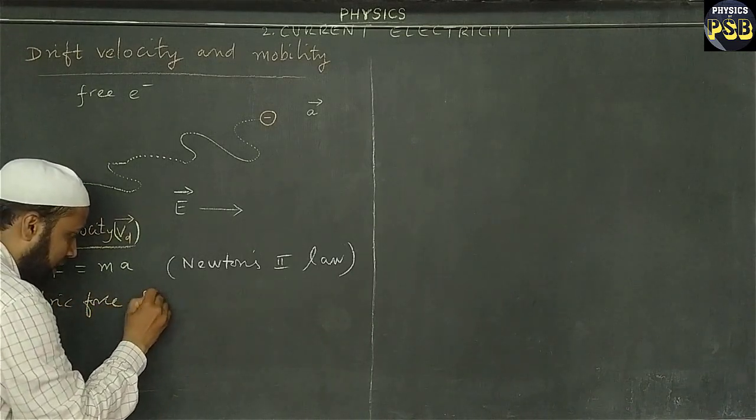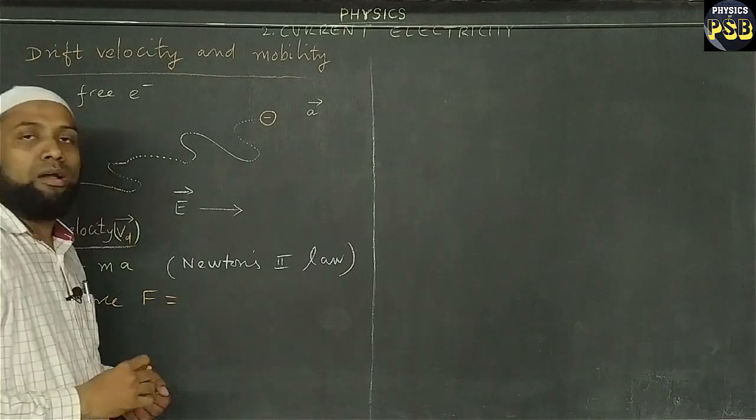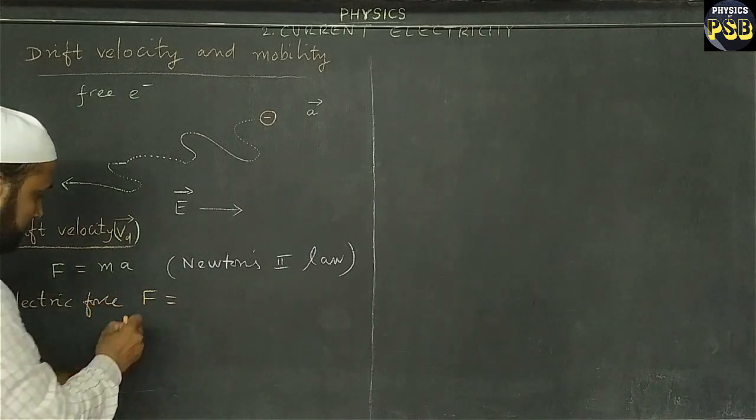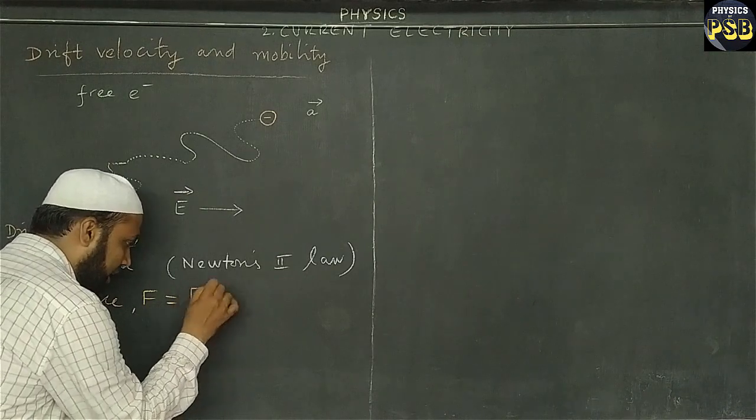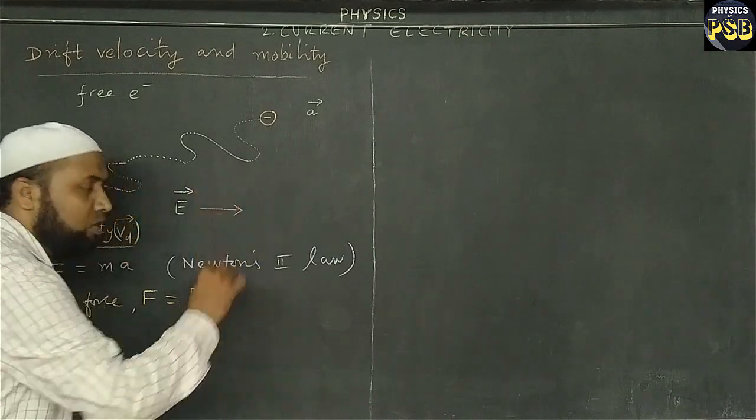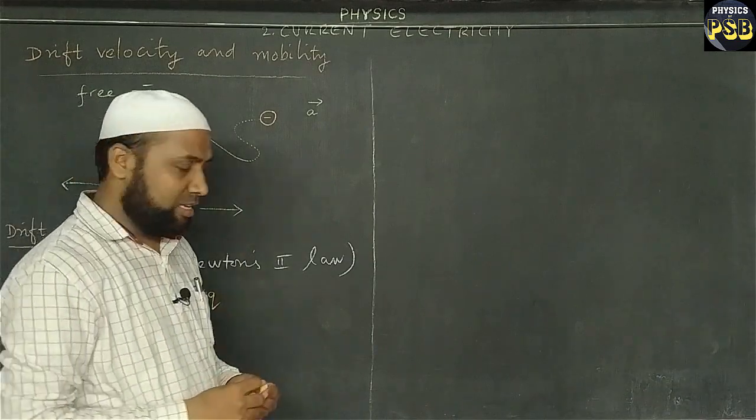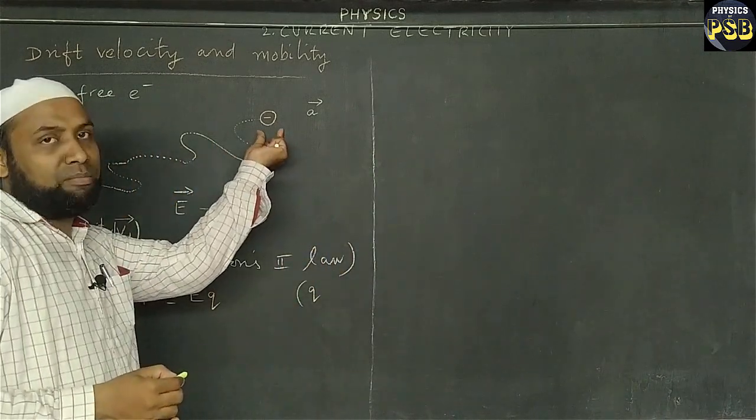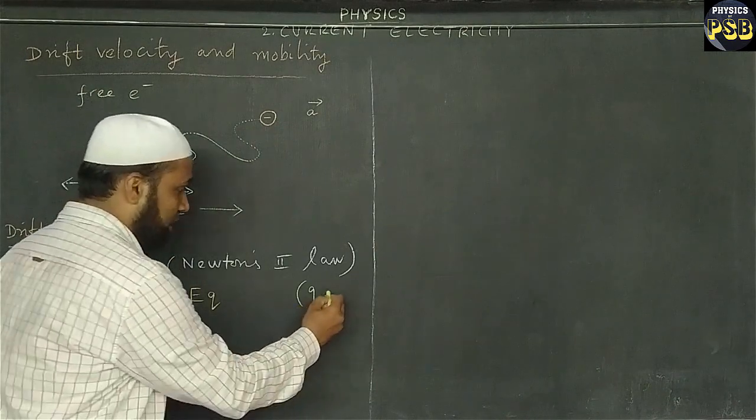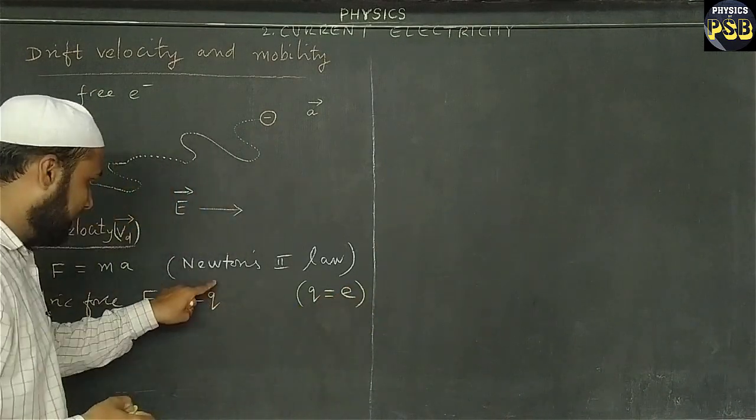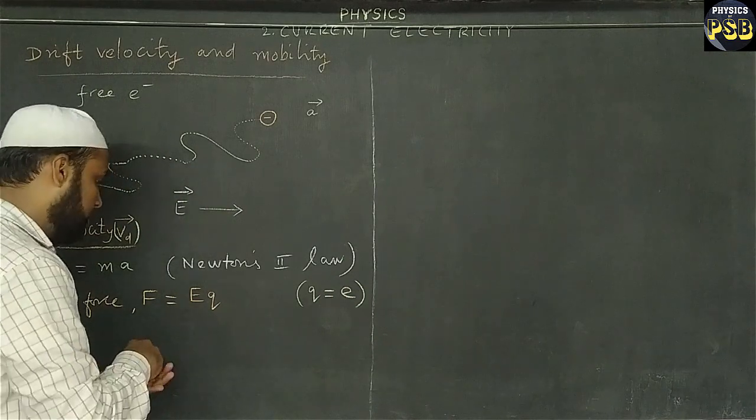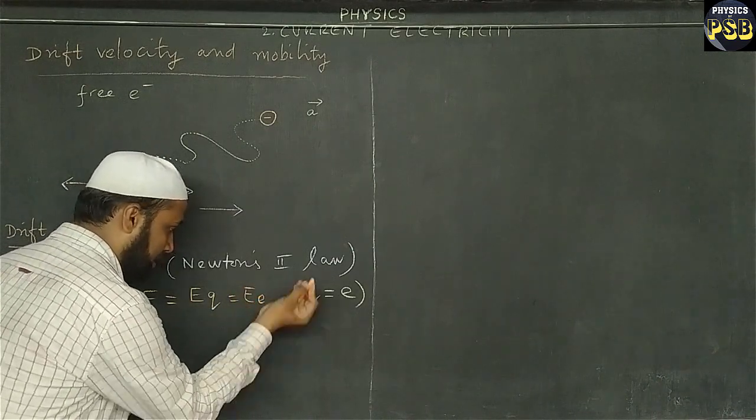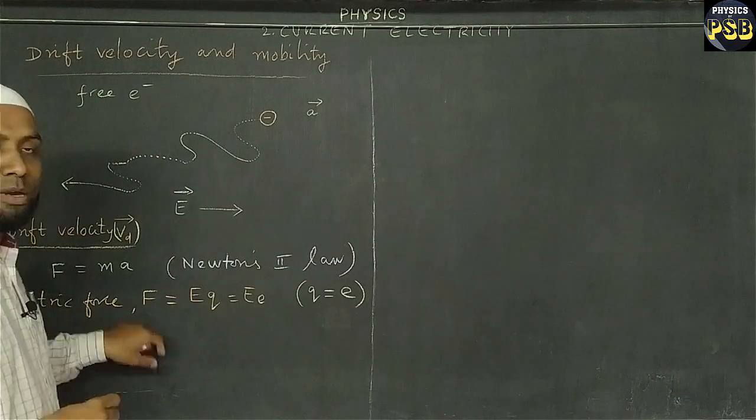to make these free electrons move towards the positive terminal. So the electric force - according to first chapter in twelfth physics, electric force F is the product of electric field E and the charge q. Electric force in our case - the moving object is nothing but free electron and electrons have charge e, so I replace the q with e. E instead of q I write e small e. This is the expression for electric force.